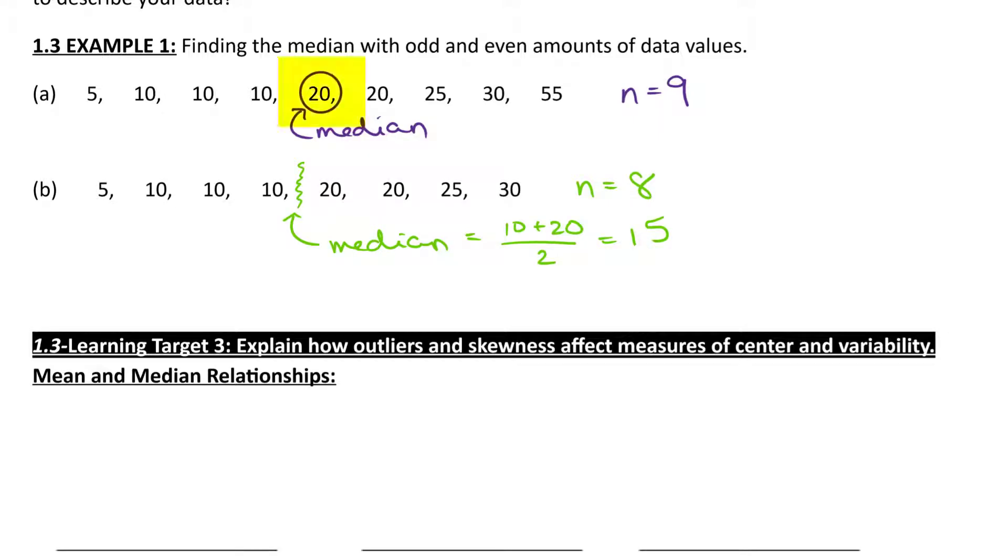So for example 1, part A, you should have gotten 20 as the median, that's your center value. And for part B, our median would be 15. Since part B had an even number of values, just a reminder, we take the average of the middle 2.